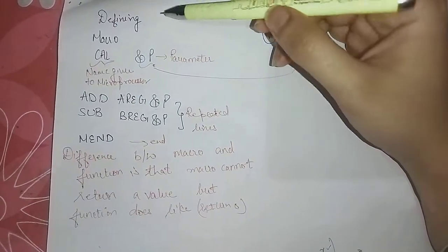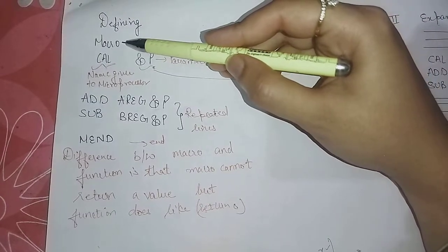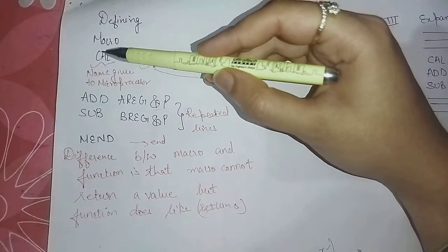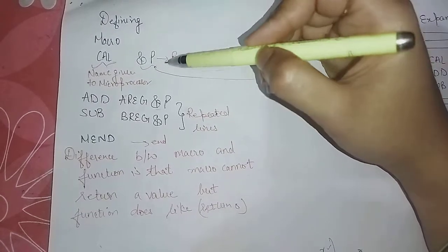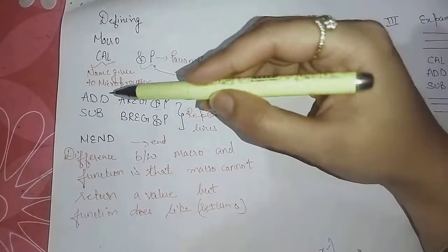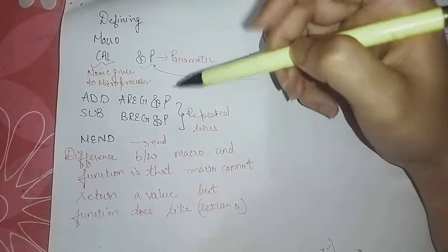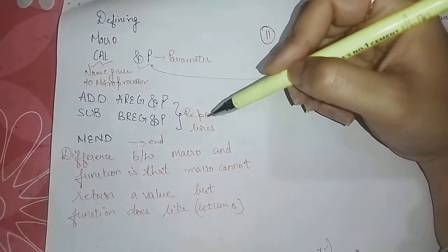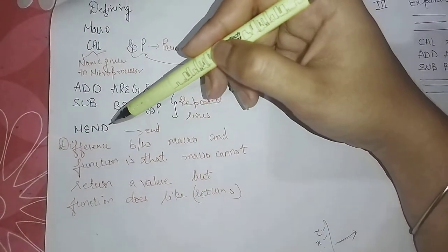Now let's define how to write the macros. I have written a name for macros. Now I have written a parameter. Now let's see. These are the things that we are repeating, repeated lines. You can write anything here. And then you will end your macros.